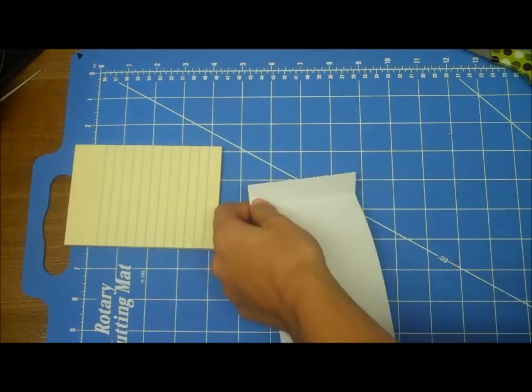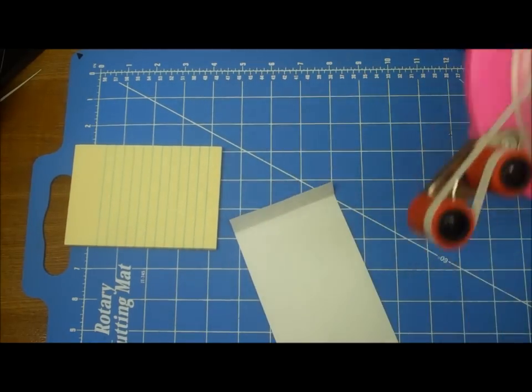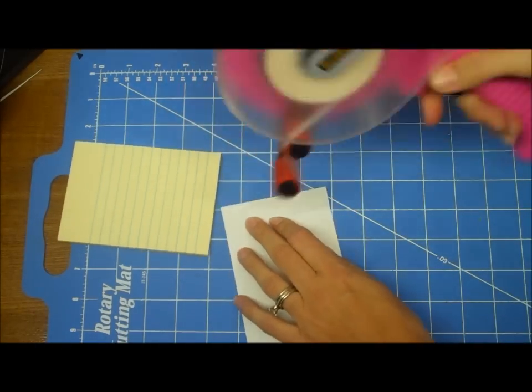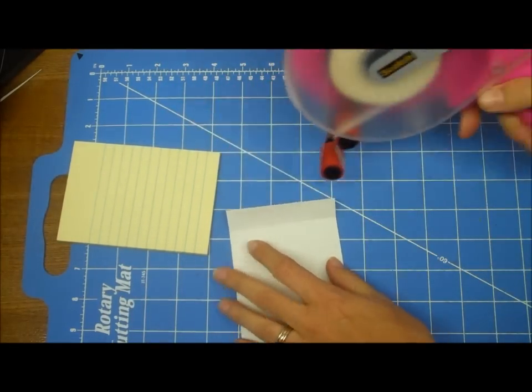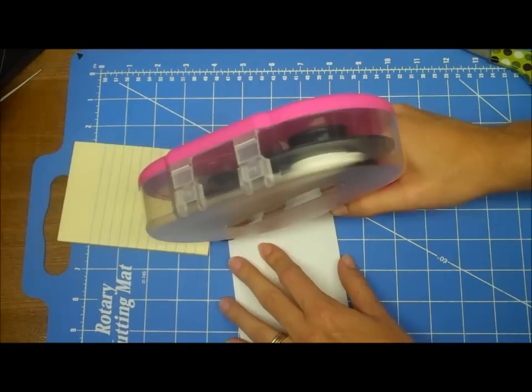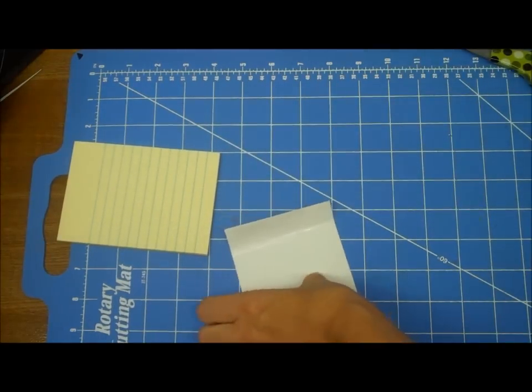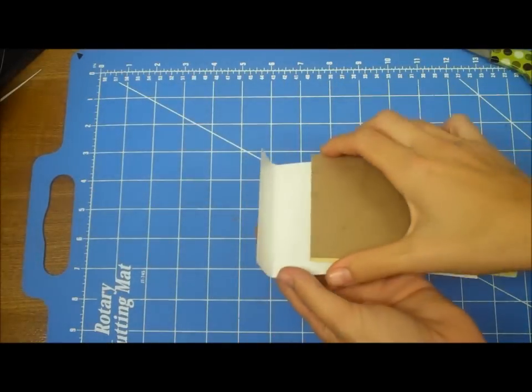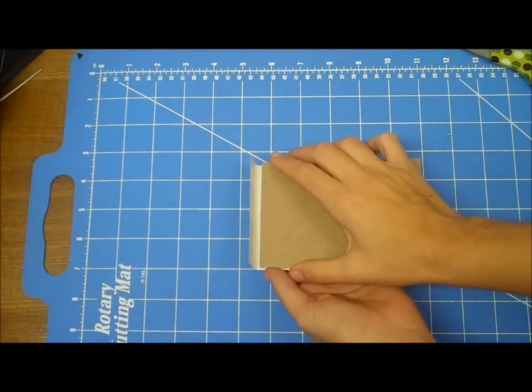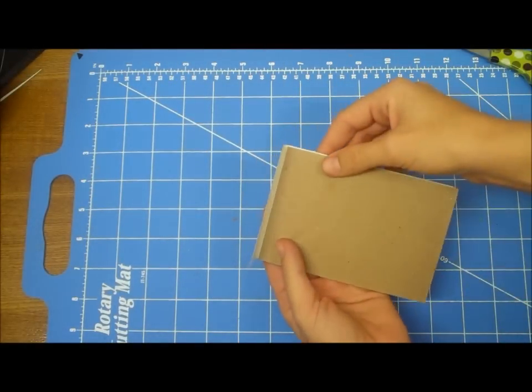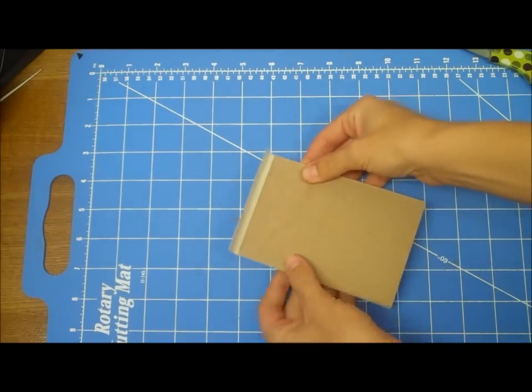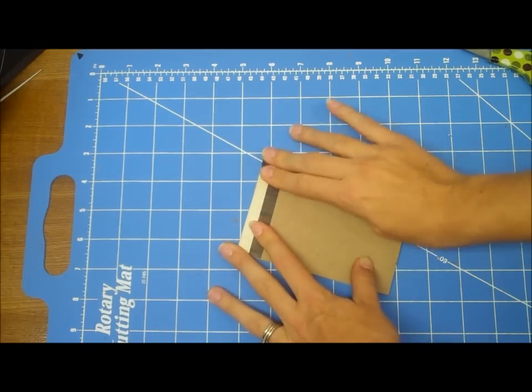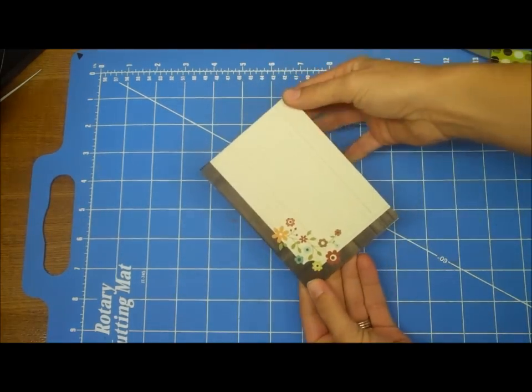And I'm going to go ahead and glue this down. So, I'm just going to take my ATG gun and you don't want to do it on the front, but you can do it right there in the crease, the small crease. And I'm going to just slide it up like that. Make sure you've got it even.